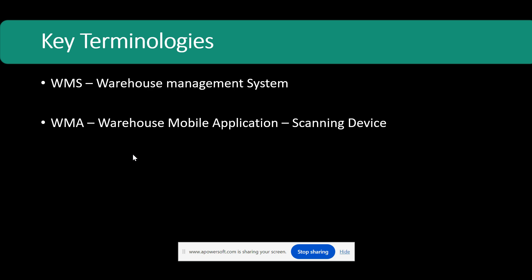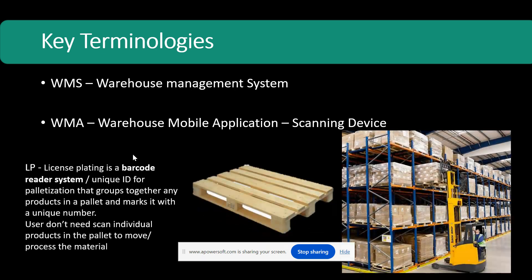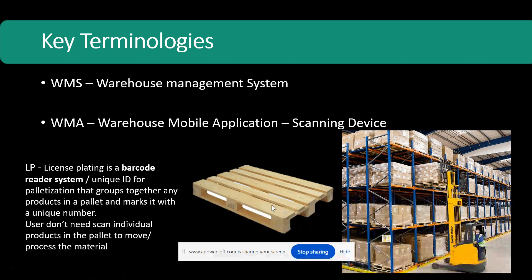Another important concept in WMS is the license plate. There are various understandings of the license plate concept, but to keep it simple: license plating is a barcode system for palletization. In previous systems there was a concept of palletization which has been updated as license plate in D365. Essentially it is a unique ID for palletization — the process of packaging materials on pallets. In warehouses, shelves have multiple pallet storage positions, and each pallet can contain multiple boxes of finished goods or raw materials.